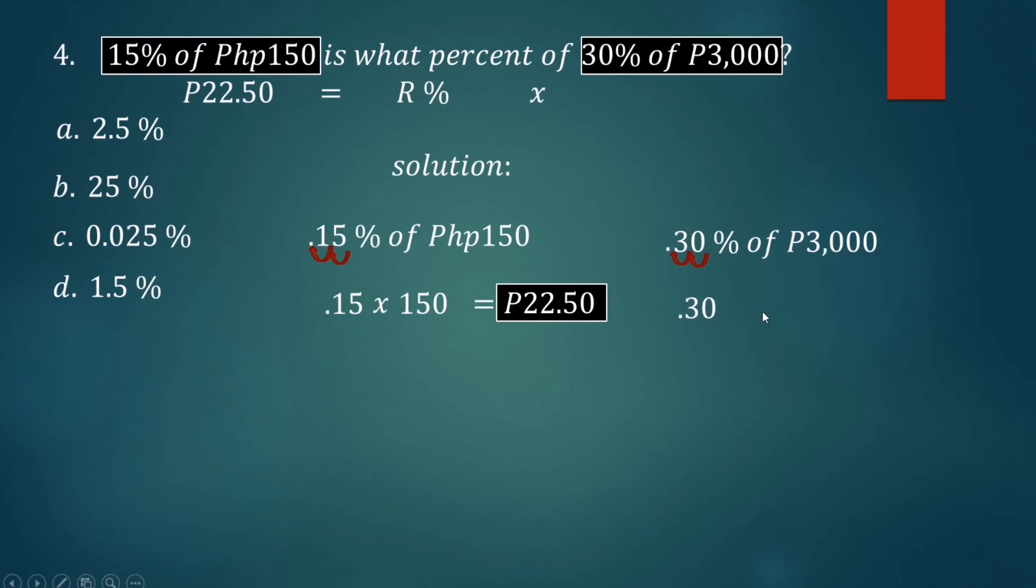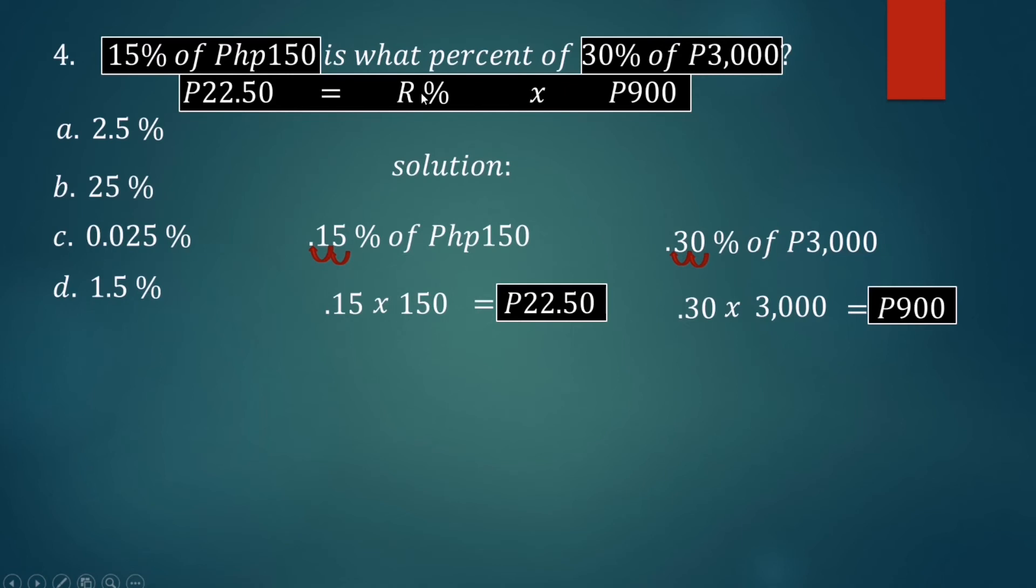So this time we have this equation to find the percent. Bring down the R percent multiplied by 900 pesos equals 22 pesos and 50 centavos. Then divide both sides by 900, cancel the 900, bring down the R percent. 22.50 divided by 900 equals 0.025.